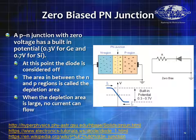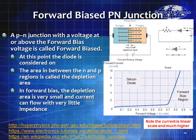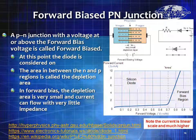The area between the N and P regions is called the depletion area. When the depletion area is large, no current can flow. That's why you need a forward bias voltage — to reduce the depletion area to the point where there is no depletion area and current flows easily. In the reverse bias region — below zero — the diode is off and the depletion area keeps getting wider and wider. Eventually it becomes so wide it's basically an entire conductor, and that's where we get into reverse breakdown or the zener region.